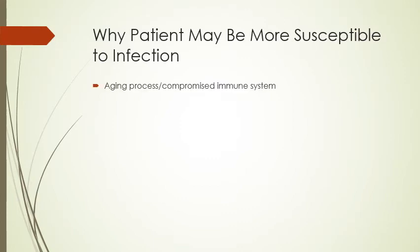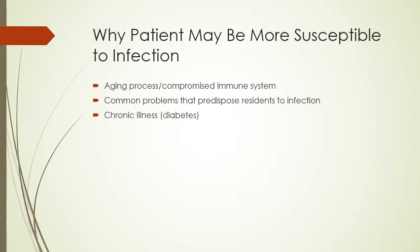Patients are more susceptible to infection because they have a compromised immune system. The elderly especially are affected — the aging process breaks down the immune system — but even someone sick in the hospital has a compromised system already working to fight off illness. Common problems that predispose patients to infection include chronic illnesses, poor nutrition, and dehydration. When you're sick you're often not eating or drinking, leading to poor nutrition and dehydration. Stress and fatigue also play a role, especially in the hospital setting.